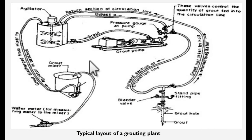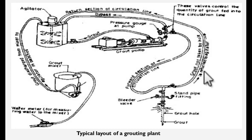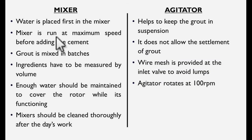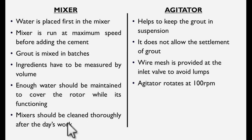This is a typical layout of a grouting plant. You can see different components here. The mixing plant produces grout which is pumped via the grout pump and then injected into the ground. Water is also injected. The mixer feeds into the agitator, which keeps the grout in a fluid state. Water is placed first in the mixer; the mixer is run at maximum speed before adding cement. Grout is mixed in batches and the mixture should be cleaned thoroughly after the day's work. The agitator keeps the grout in suspension, does not allow settlement, has a wire mesh at the inlet valve to avoid lumps, and rotates at 100 rpm.